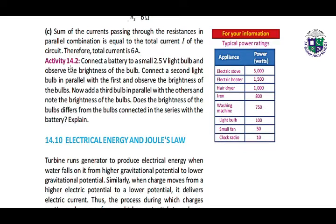Activity 14.2: Connect a battery to a small 2.5-volt light bulb and observe the brightness of the bulb. Connect a second light bulb in parallel with the first and observe the brightness of the bulbs. Now add a third bulb in parallel with the others and note the brightness of the bulbs. The brightness of the bulbs differs from the bulbs connected in series with the battery.